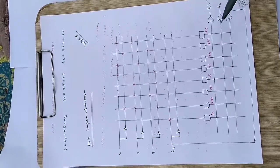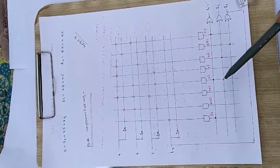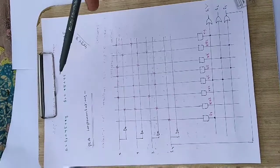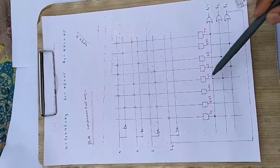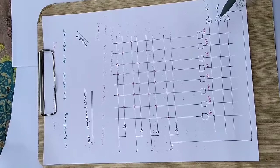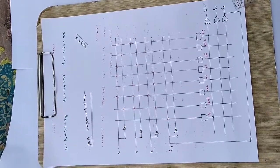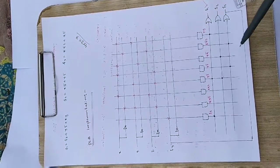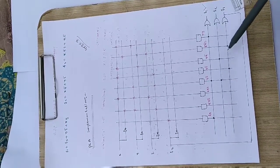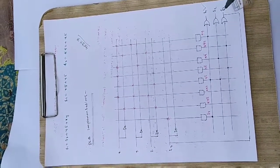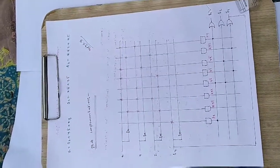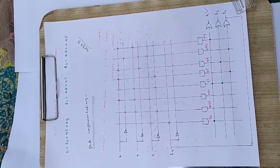Similarly for F2, which equals XȲ + YZ̄: we make a connection at the XȲ AND gate output and then at the YZ̄ AND gate output. These two connections added together give F2. For F3, which equals X̄ȲZ + XZ̄: we connect X̄ȲZ and XZ̄ to the OR gate. The output F3 is then fed back as an input to the AND array for use in F1. This is how you implement a PLA design.